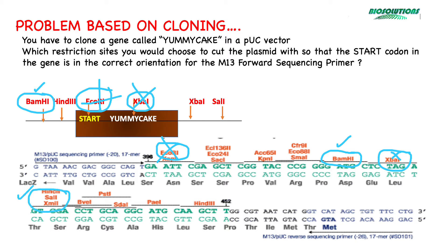We can see that SAL1 is present in both as well and seems to be suitable with respect to orientation of the primer site. Why we cannot use HINDI3, which is also present in GOI and vector and seems to be suitable? We are doing directional cloning so that the start codon is towards the forward primer. If we choose HINDI3 as one of the enzymes, which is just before the start codon, we have to choose SAL1 as the second enzyme since XBA1 cannot be used. In PUC MCS, SAL1 comes before HINDI3. Hence, the most suitable pair of enzymes will be BAMH1 and SAL1 for this cloning.